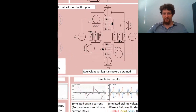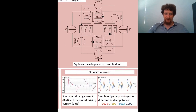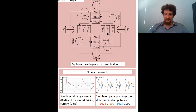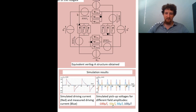Here we have some simulation results. We can see a simulation and a measurement, and both curves are extremely close to each other. We also have a simulated voltage across the pickup coil, and we can see that depending on the amplitude of the magnetic field, the amplitude of the output pulse changes as well, which is the expected behavior.